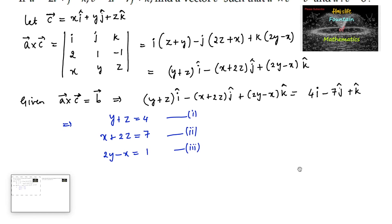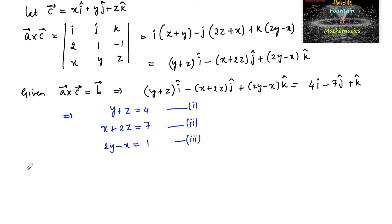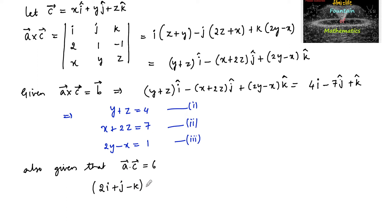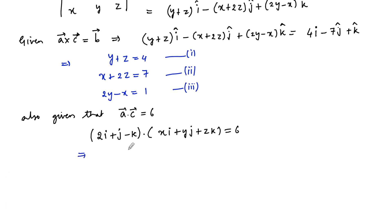Also given that a dot c is equal to 6. So vector a (2i plus j minus k) dot product with vector c (xi plus yj plus zk) is equal to 6, which gives 2x plus y minus z is equal to 6. Let us consider this equation 4.